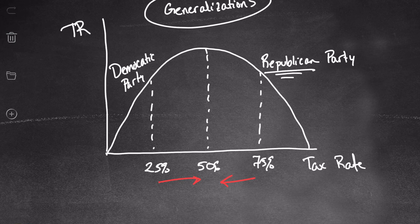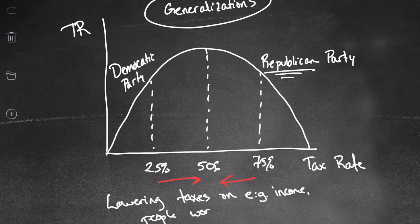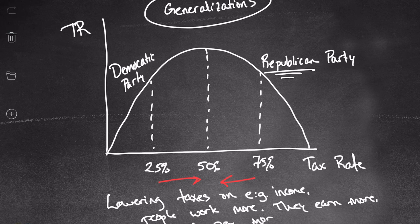This is why Republicans typically argue that their tax cuts will pay for themselves. In theory, even though you're taxing people fewer dollars, they increase their activity — so they actually end up paying more in taxes. The logic is: lower taxes on income → people work more → they earn more → and they pay more in taxes.